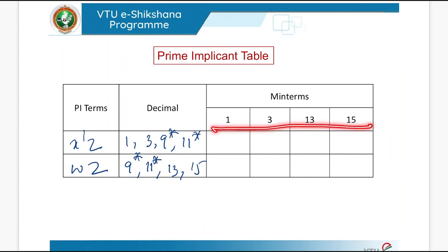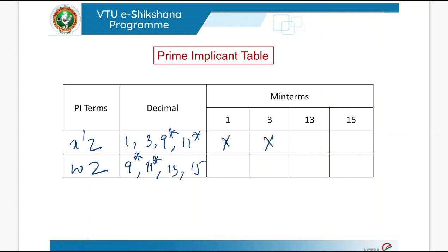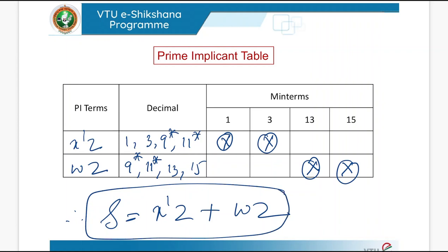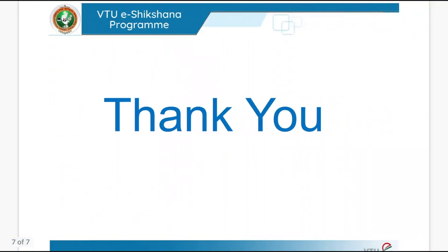In the prime implicant table we consider only the main terms, not the don't care terms. The first PI term covers main terms 1 and 3; the second PI term covers main terms 13 and 15. Each column has a single cross mark, so both are essential prime implicants. The first group gives X̄Z and the second gives WZ. Therefore, the simplified expression is F = X̄Z + WZ. This is the simplified expression using Quine-McCluskey with don't care terms. Thank you.